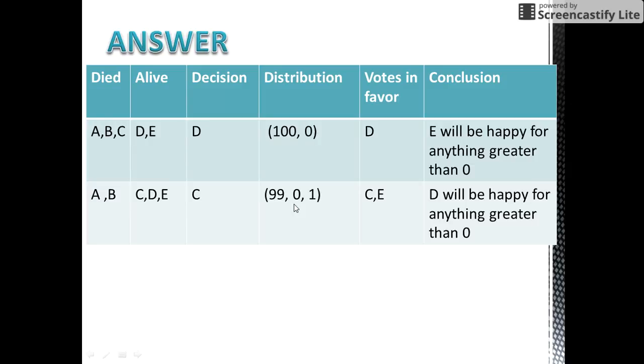Here D would be getting 0 coins, so if B would have proposed a plan, D would happily vote for him as he would be happy to get anything greater than 0.